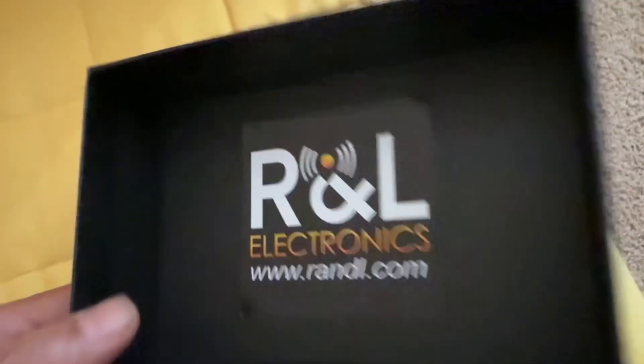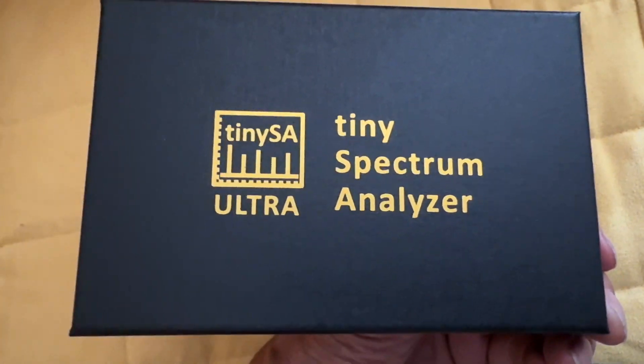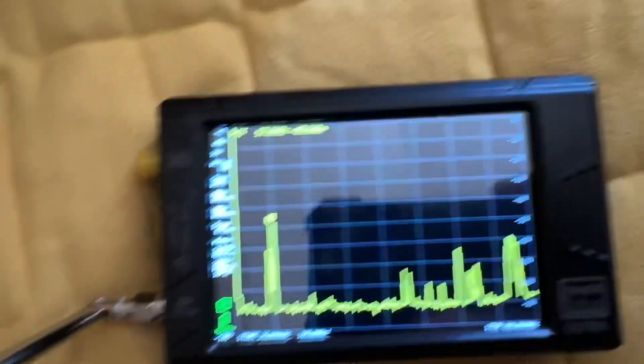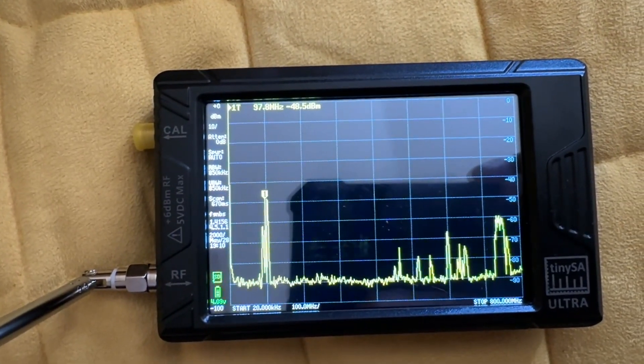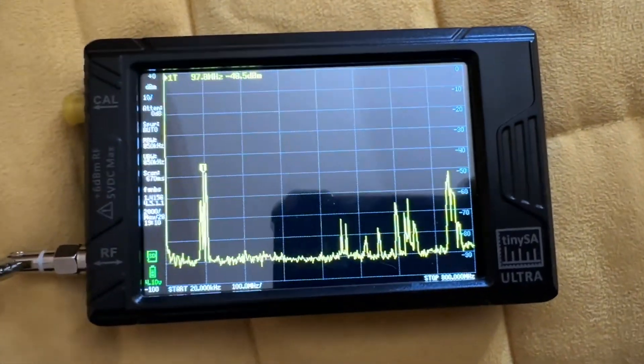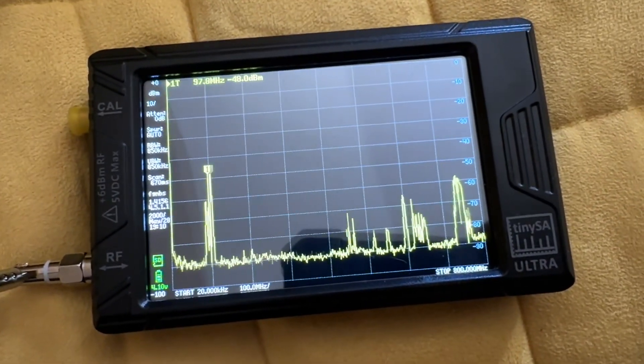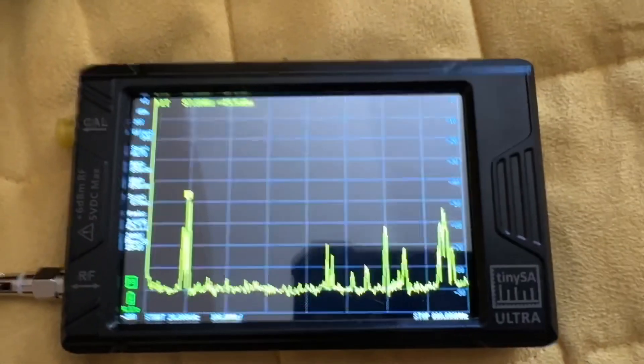I bought it from this company called R&L Electronics, and this device is called a Tiny Spectrum Analyzer. Now in today's video, we're going to use this device to investigate the RF output of a small Tesla coil and see how that compares with the spectrum of radiation that's already out there.